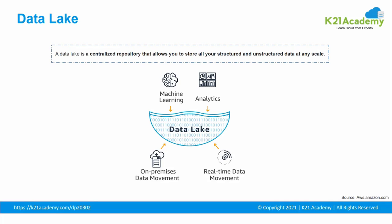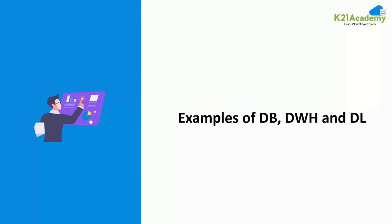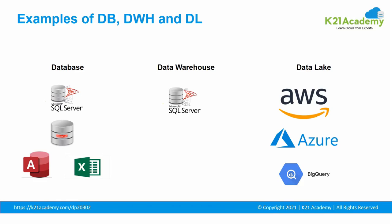Now let's look at some examples. For databases: SQL Server, Oracle, MS Access, and Excel Spreadsheets. A data warehouse is a special type of database, so SQL Server also offers data warehouse capabilities. For data lakes, they are usually maintained in the cloud as well as on-premise, using platforms like Amazon Web Services, Microsoft Azure, and Google BigQuery.